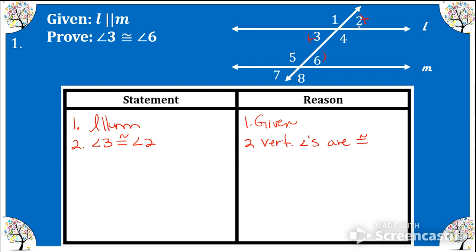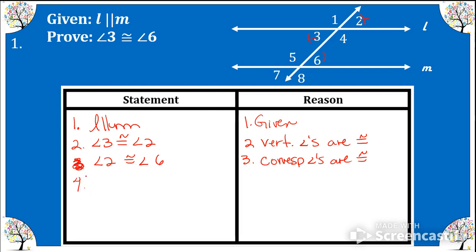Now that I know angles 3 and 2 are congruent, I also know angles 2 and 6 are congruent — statement number 3: angle 2 is congruent to angle 6 because of corresponding angles are congruent. And since angle 3 is congruent to angle 2 and angle 2 is congruent to angle 6, we can conclude that angle 3 is congruent to angle 6 because of the transitive property.